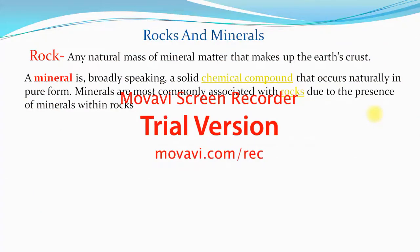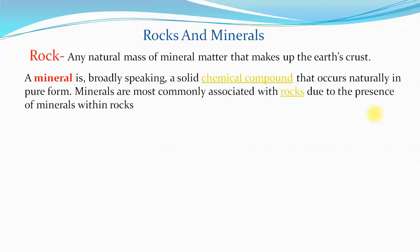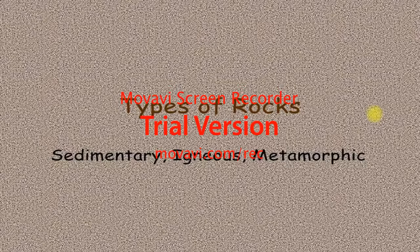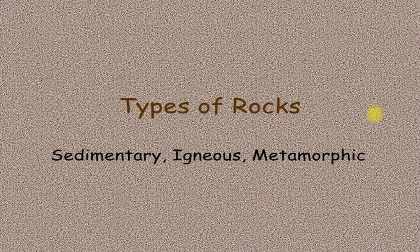Now we look at rocks and minerals. Rock is a naturally formed material used in minerals and as a crushed material. A mineral is a solid chemical compound. There are different types of rocks, and we will explore each type of rock further.